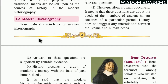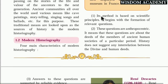Modern historiography means studying history using the latest methods and showing different types of proof. If I want to prove something about history, I need to show various types of documents and proof. Only after that proof can we say that the research is correct. The first characteristic is that it is a method based on scientific principles.